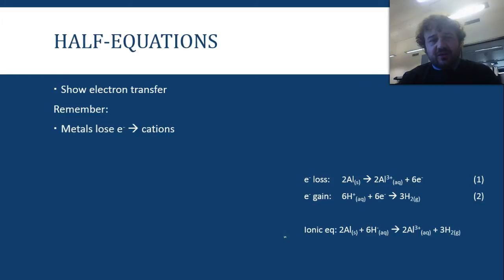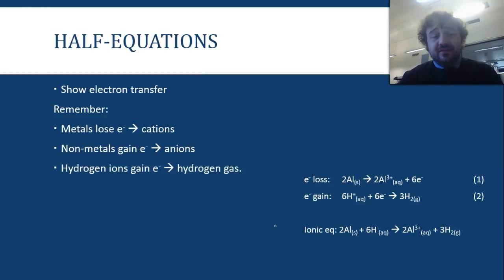So, a bit more detail. They show electron transfer. Now, that's very important to remember. Metals lose electrons, that gives you a cation. Non-metals gain electrons, that gives you an anion, and hydrogen ions gain electrons to make hydrogen gas.